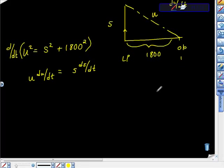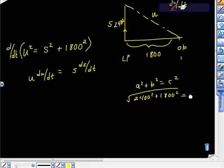We know that S is 2400 feet because the problem says the rocket is 2400 feet above the ground. Using the Pythagorean theorem, 2400 squared plus 1800 squared equals U squared. Taking the square root of both sides, U equals 3000 feet. That's the distance when the rocket is at that height.